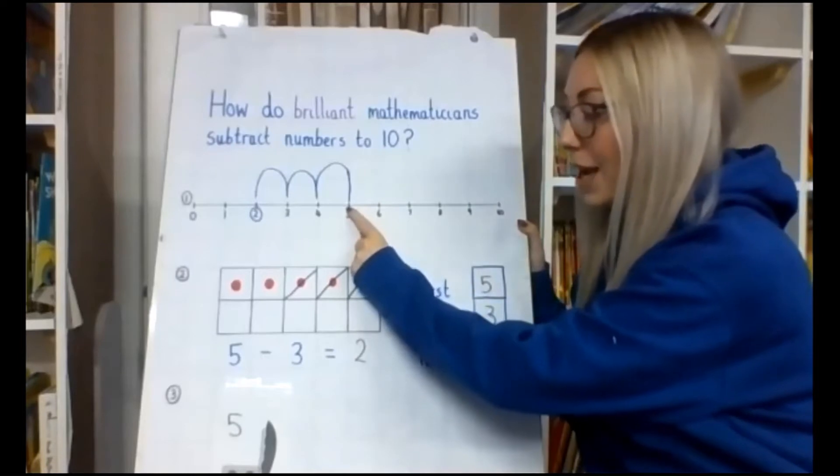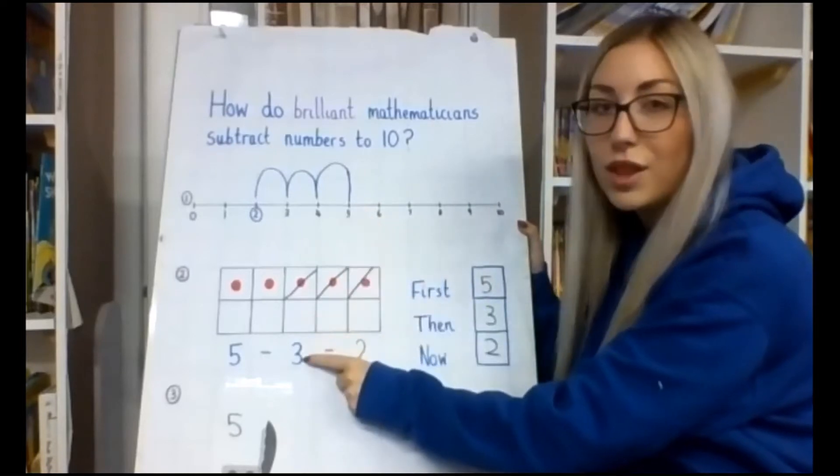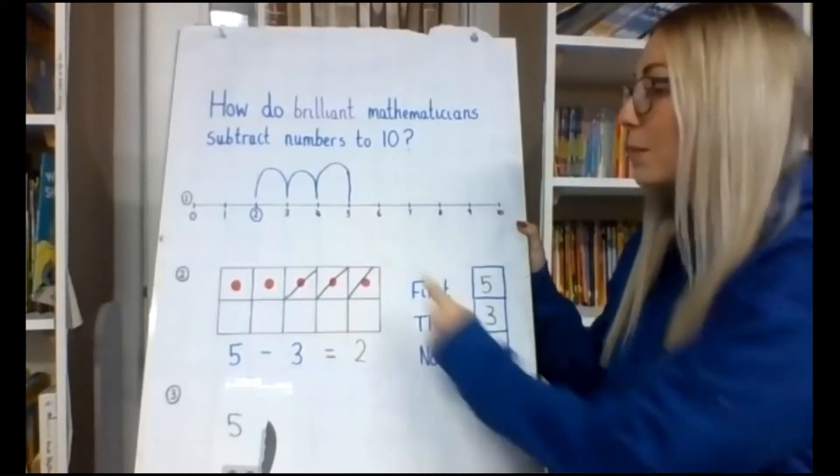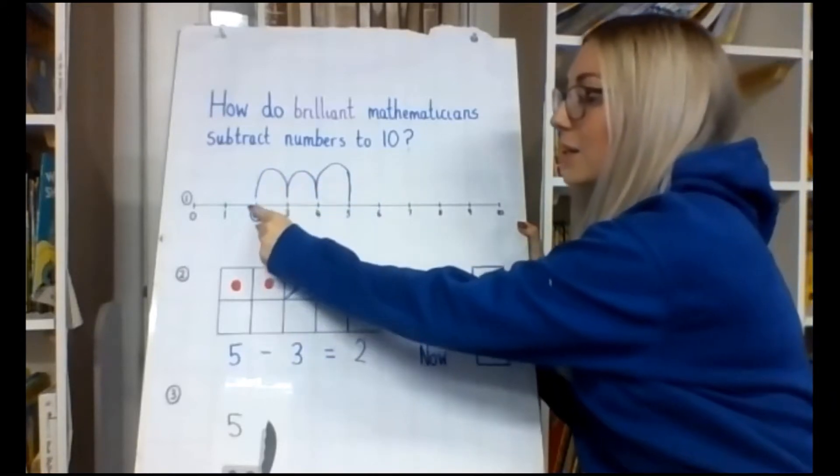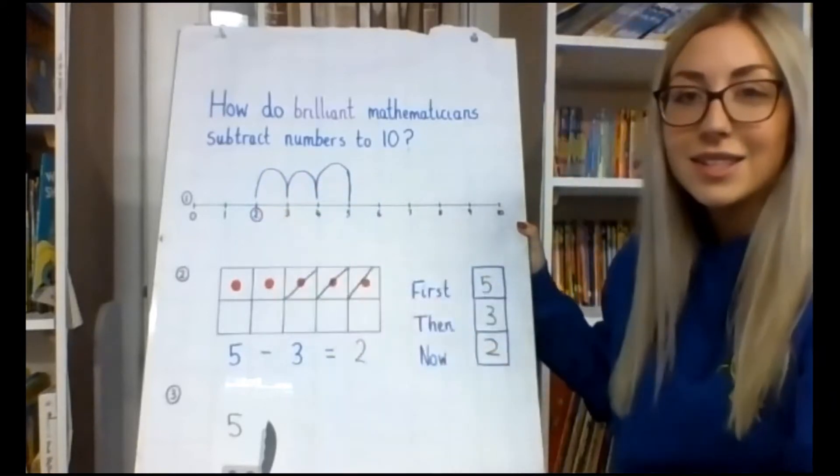So we're going to go down our number line, and because we are taking away 3, we are going to do a number of jumps. So 1, 2, 3, circle our answer and the answer is 2.